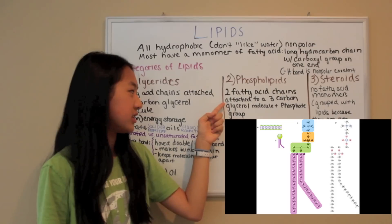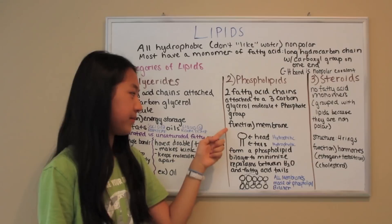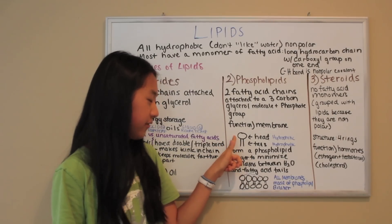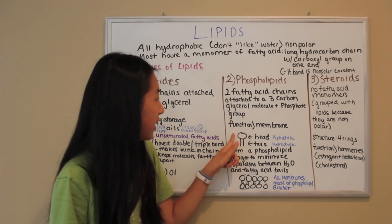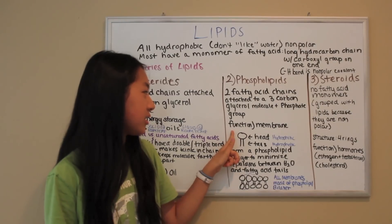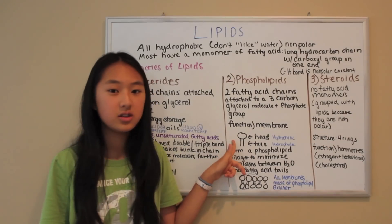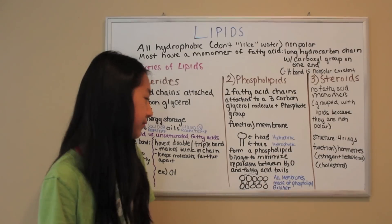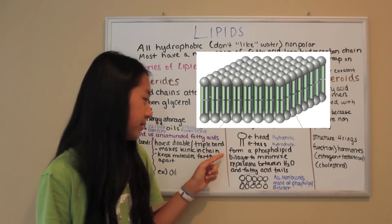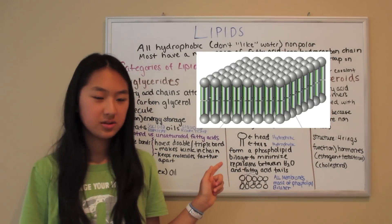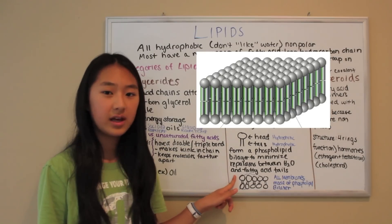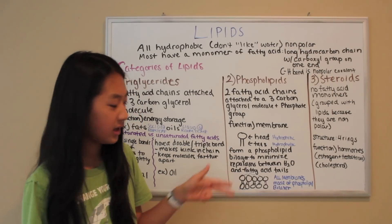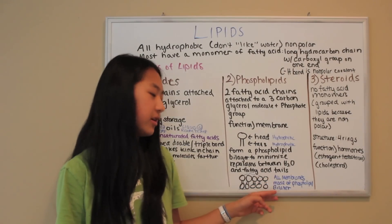Phospholipids are two fatty acid chains attached to a three-carbon glycerol molecule and a phosphate group. Their function is making up membranes. This is a simplified drawing of a phospholipid — here's the head and here are the two tails. The head represents the three-carbon glycerol molecule and the phosphate group, and the tails represent the two fatty acid chains. The head is hydrophilic, meaning it likes water, and the tails are hydrophobic, meaning they don't like water. Together, the phospholipids form a phospholipid bilayer to minimize repulsions between water and the fatty acid chains — the heads touch the water and the tails do not. This is what a membrane looks like, and all membranes are made of phospholipid bilayers.